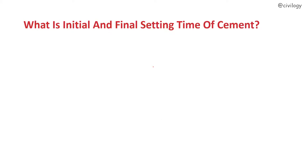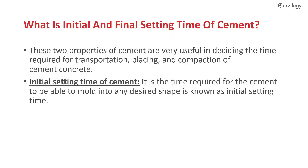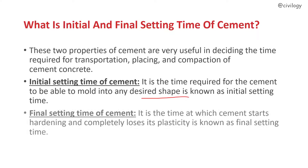Initial and final setting time of cement are very useful in deciding the time required for transportation, placing, and compaction of cement concrete. Initial setting time is the time required for the cement to be able to mold into any desired shape. Final setting time is the time at which cement starts hardening and completely loses its plasticity.